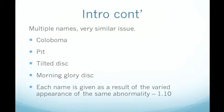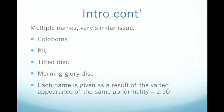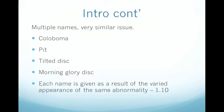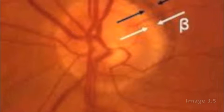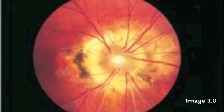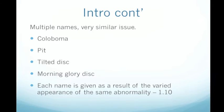Something to note is that in science, multiple names are often given to very similar issues. In the following photos there's really not a lot of difference between a coloboma, a pit, a tilted disc, and a morning glory disc. Here we can see a morning glory flower, which appears to have visual similarities to the retina. The names of these medical issues are given based on their appearance and similarity to other objects or structures.